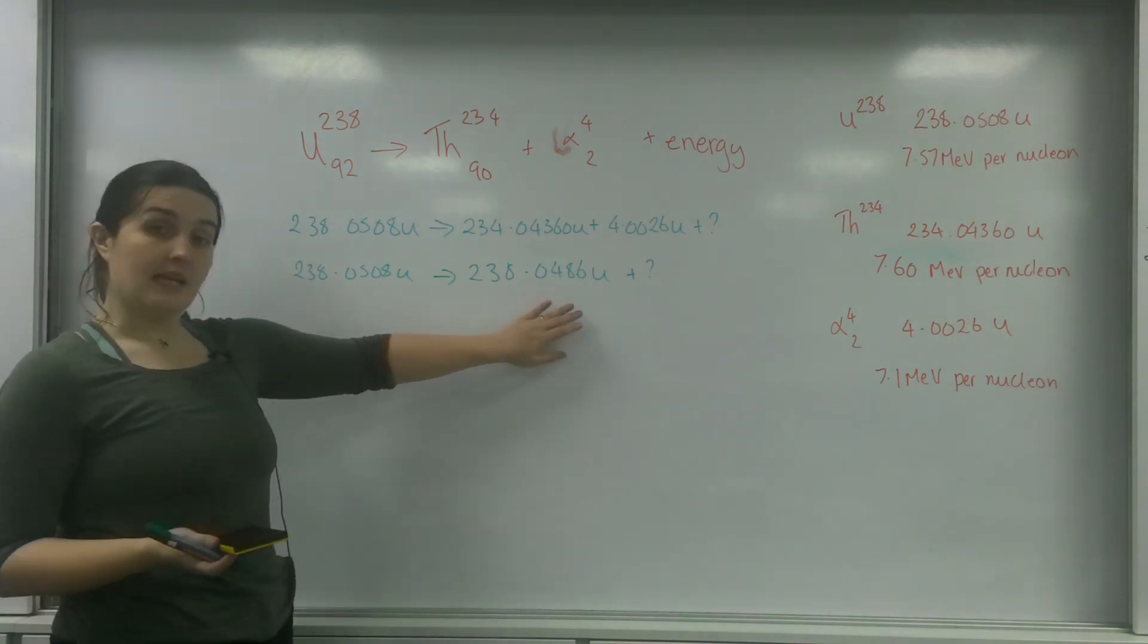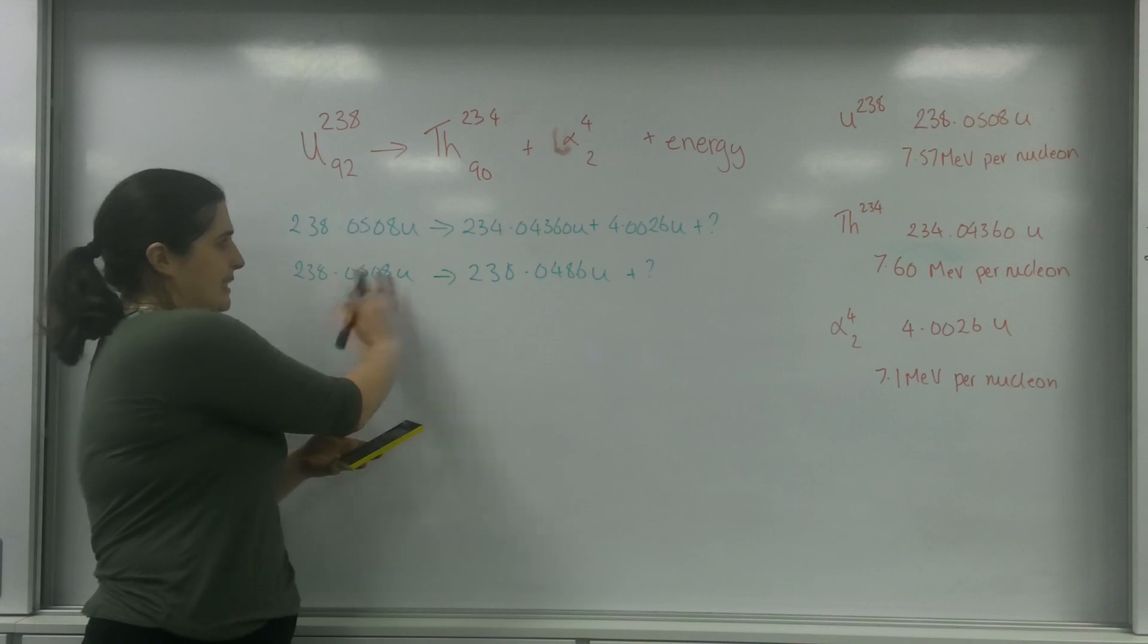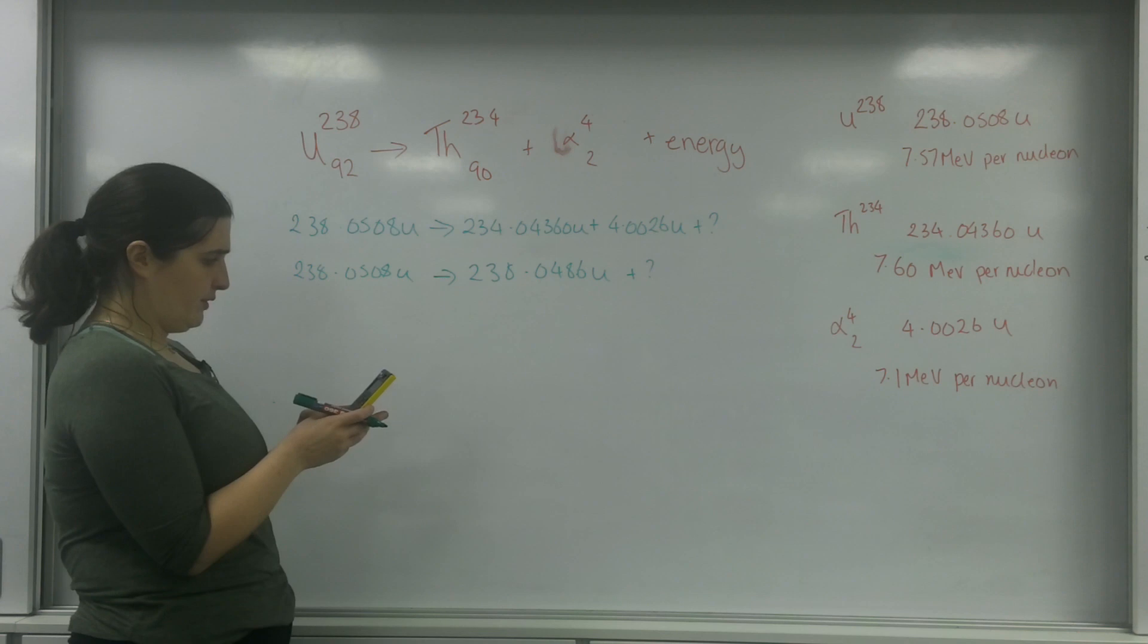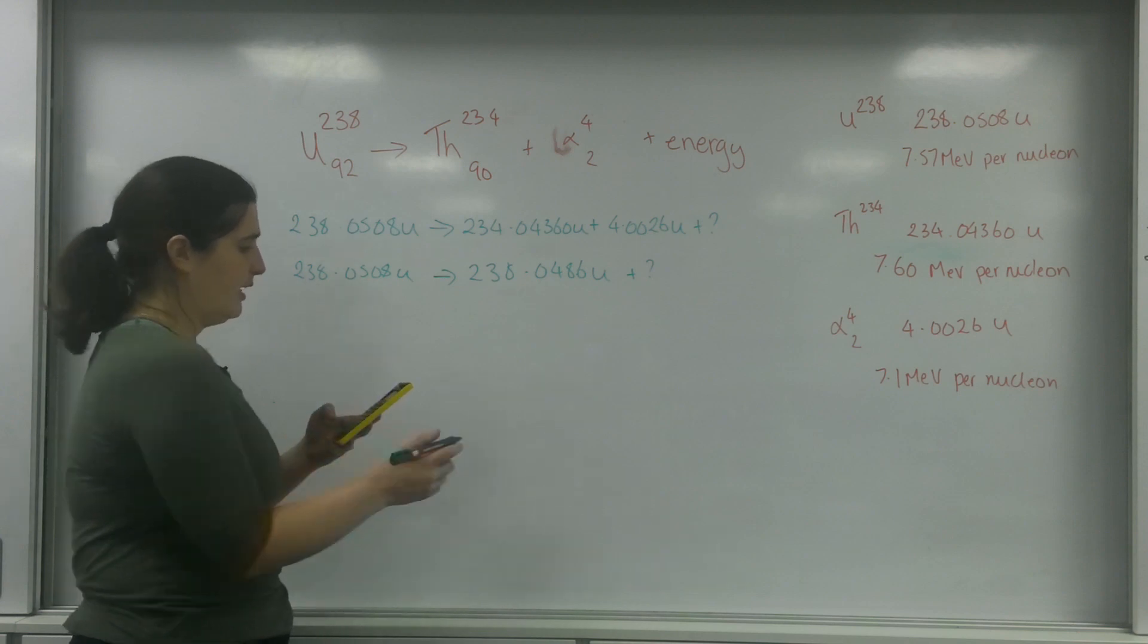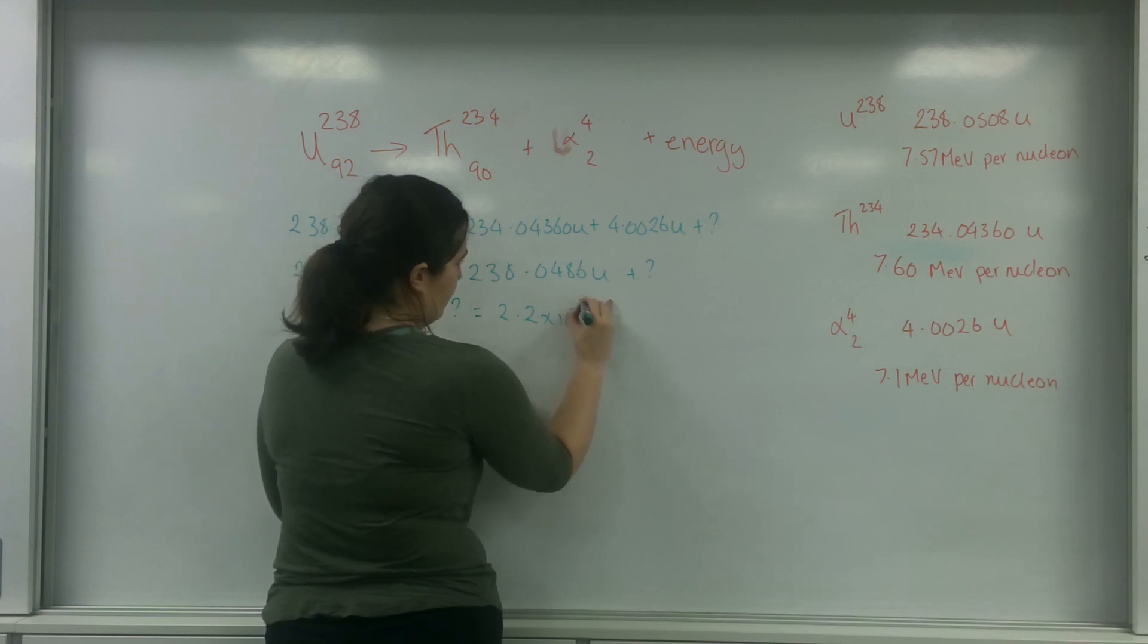As you can see here, I'm missing some mass. I'm going to find out what that is by taking 238.0508 minus 238.0486. My question mark is 2.2 times 10 to the minus 3U.